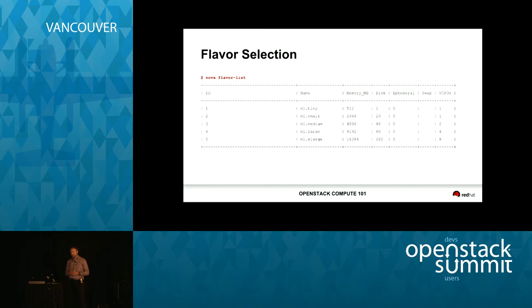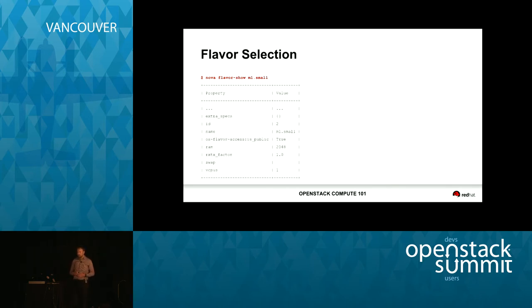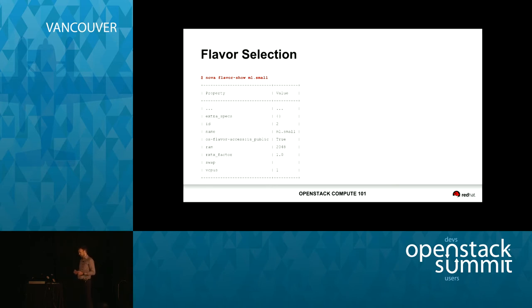Looking at the list of flavors in my cloud, m1.large is half the size of extra large, medium is half the size of large, and so on. You'll notice that m1.tiny breaks this model a little bit — instead of being half the size of m1.small, it's actually a quarter of the size, and it has only a one-gig disk requirement for really small images. When I do a show on a flavor, I can also see the extra specifications key. That allows us as cloud administrators to enable more advanced features in Nova, such as CPU pinning, large pages, and other special configuration options.